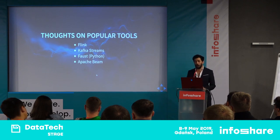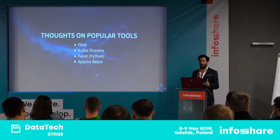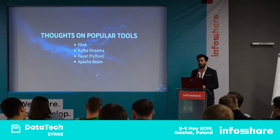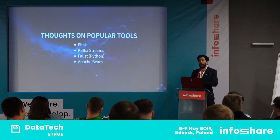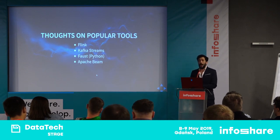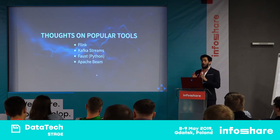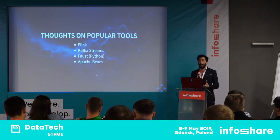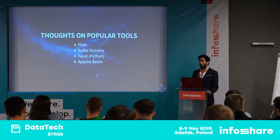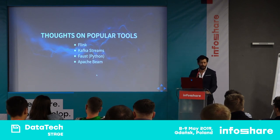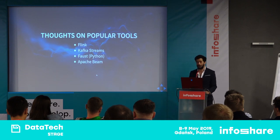Some thoughts on popular tools: Flink is a data processing framework that's become popular because it's very focused on stream processing. When it comes to checkpointing, windows, and watermarking, Flink provides some of the most mature functionality. Unfortunately, it doesn't have as much of an ecosystem as other tools. If you want to do machine learning, you're dependent on the Flink ML library, which is still in very early stages.